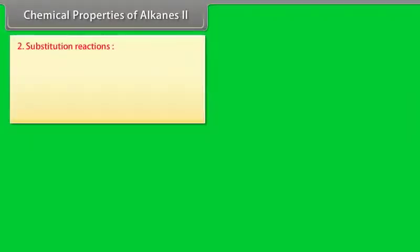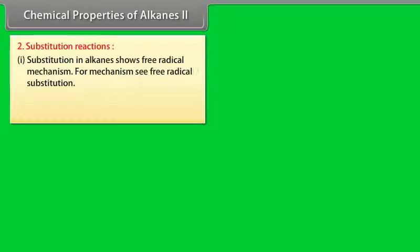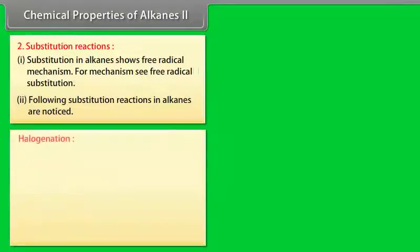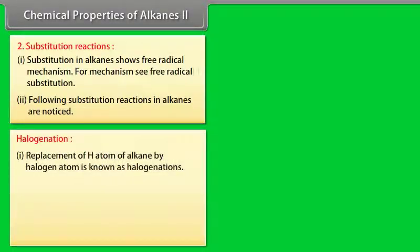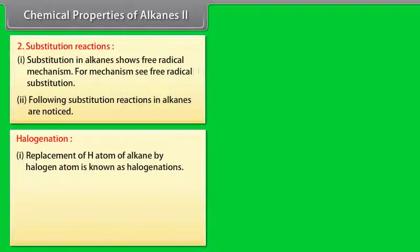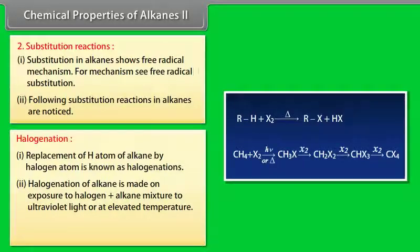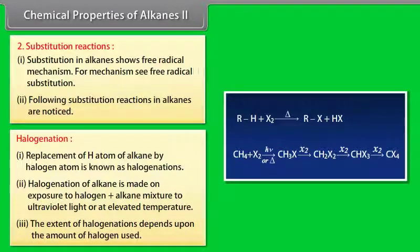Chemical properties of alkanes 2, Substitution reactions: 1. Substitution in alkanes shows free radical mechanism. 2. Following substitution reactions in alkanes are noticed. Halogenation: 1. Replacement of hydrogen atom of alkane by halogen atom is known as halogenation. 2. Halogenation of alkane is made on exposure to halogen plus alkane mixture to ultraviolet light or at elevated temperature. 3. The extent of halogenation depends upon the amount of halogen used. Isomerization: 1. The process of conversion of one isomer into other is known as isomerization.